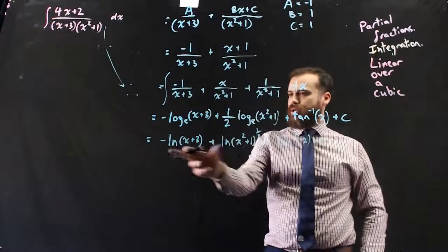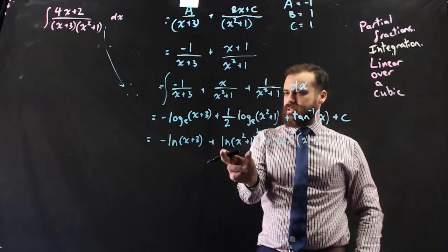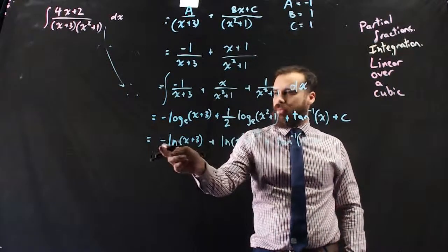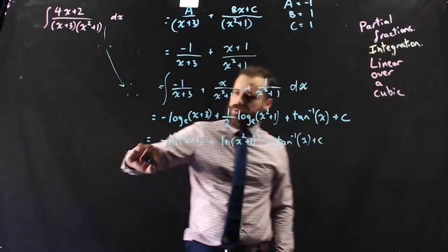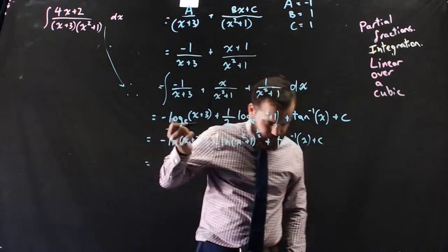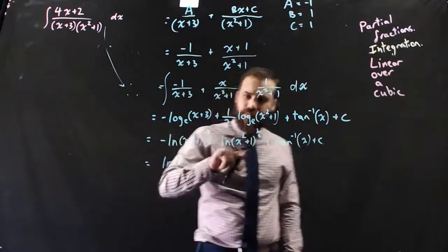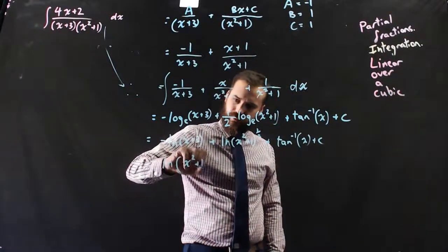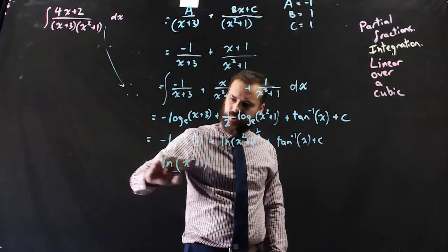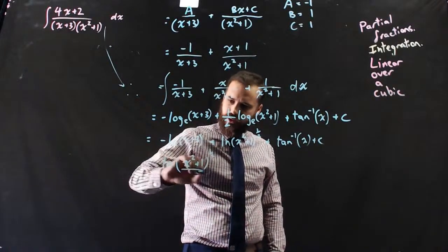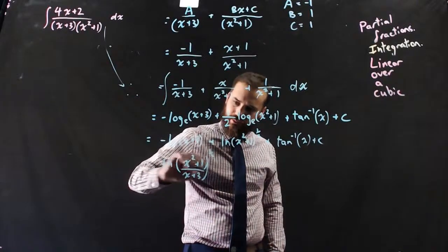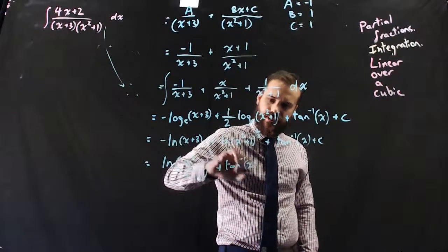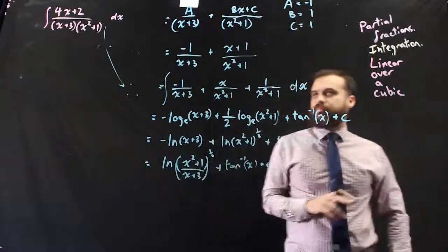And then we can combine these two into something. So we've got ln x squared plus 1 to the half minus ln x plus 3. So we should be able to rewrite that as ln, it's that one on the top to the half over that's one big bracket, plus inverse tan x plus c.